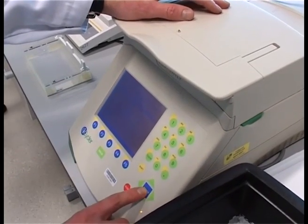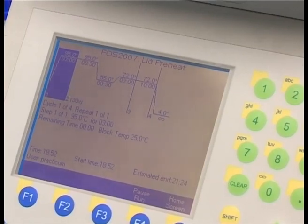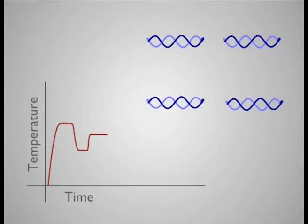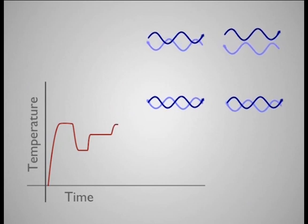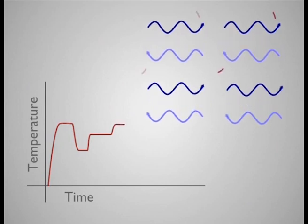The reaction takes place in a thermocycler that can rapidly heat and cool the samples. The cycle of strand separation by heating, primer annealing, and subsequent DNA synthesis is repeated many times until significant quantities of the product DNA have been generated.